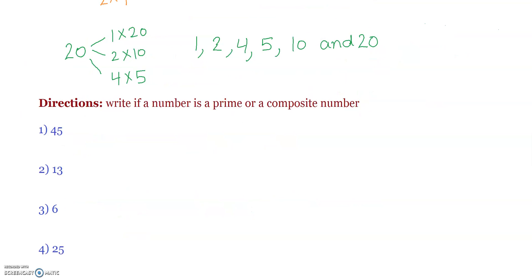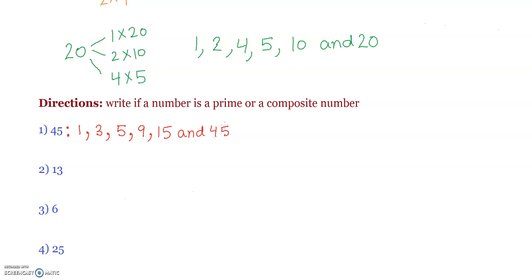Let's look at more examples. Write if a number is prime or composite. The first example is 45. The factors of 45 are 1, 3, 5, 9, 15, and 45. Since it has more than two factors, it is a composite number. The second example is 13. The factors of 13 are 1 and 13, because 1 times 13 is 13 and 13 times 1 is 13. It has only two factors, so 13 is a prime number.